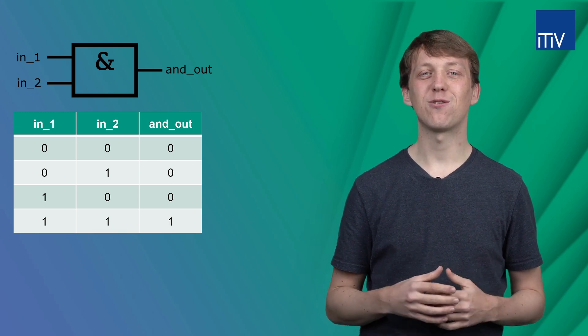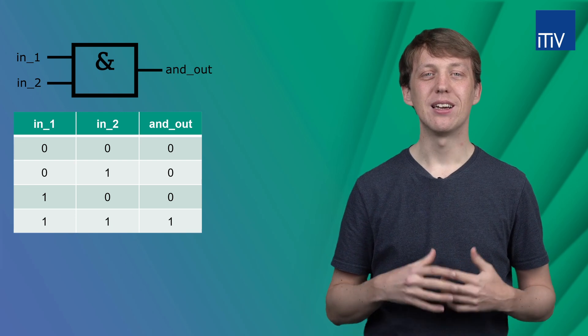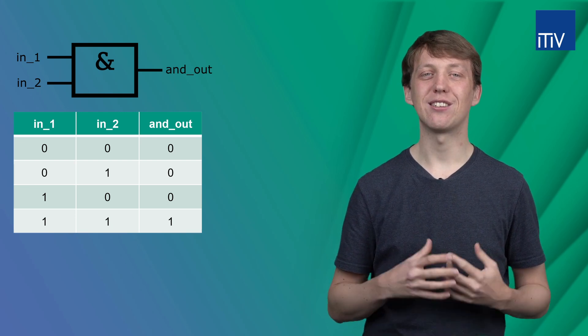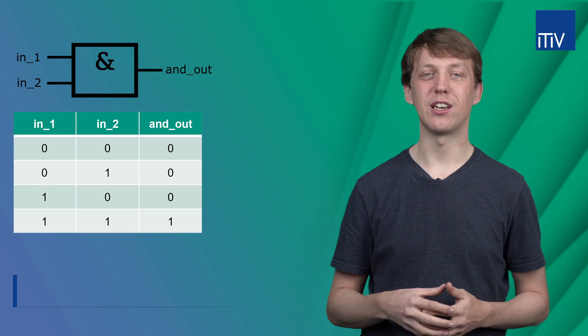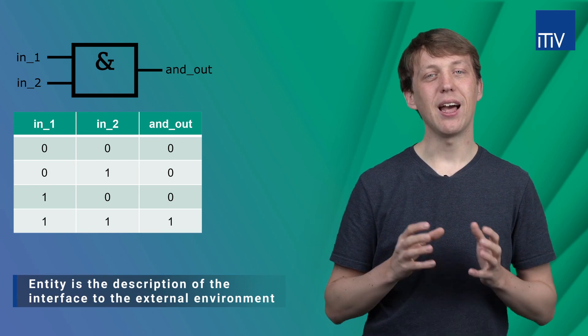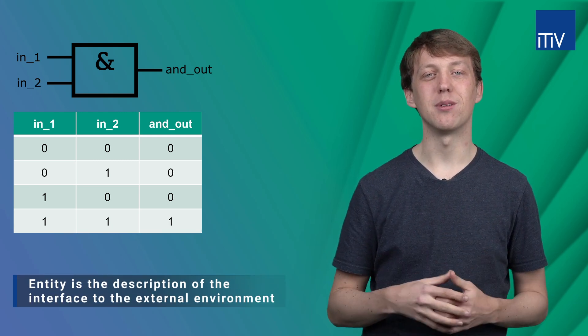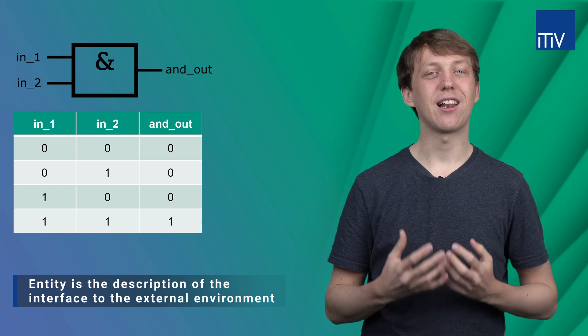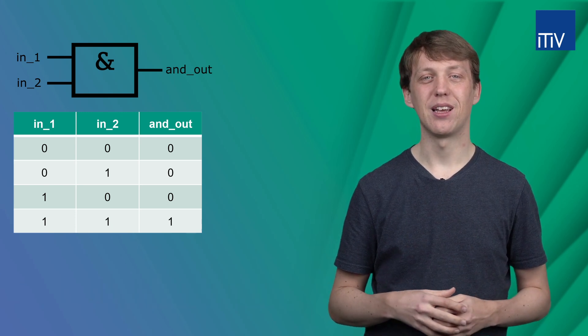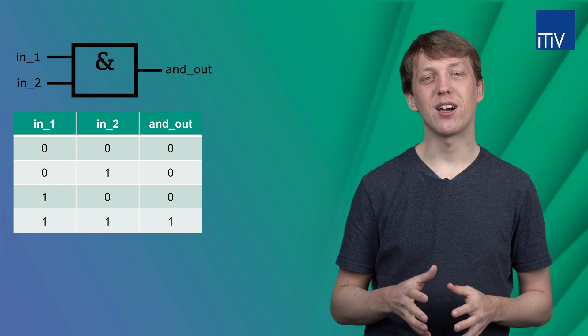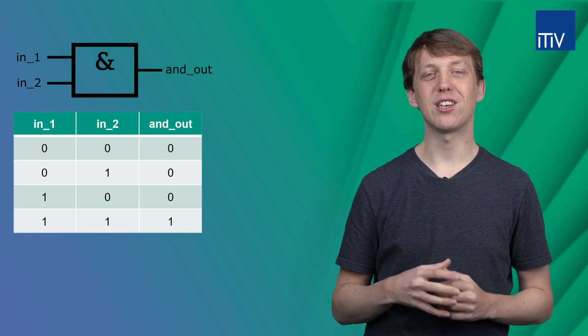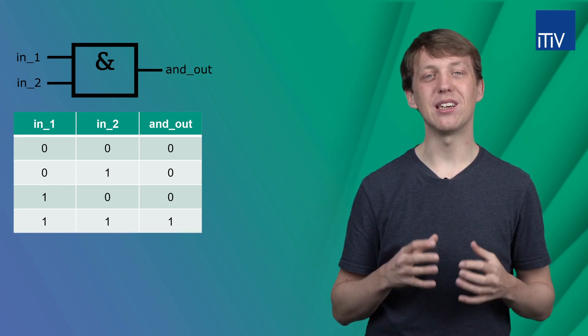First we have to define the entity. The entity in VHDL is the description of the interface between a design and its external environment and also declares the design name. In this section you define how the model should communicate with other components in its environment.